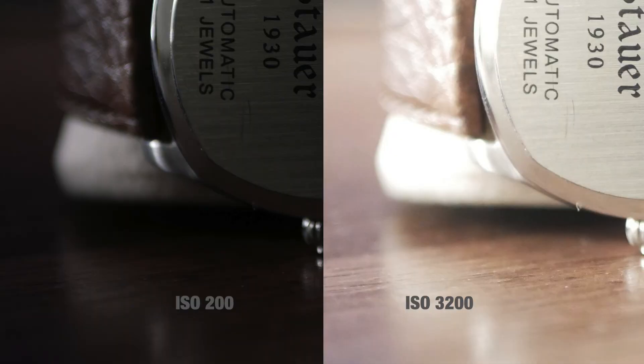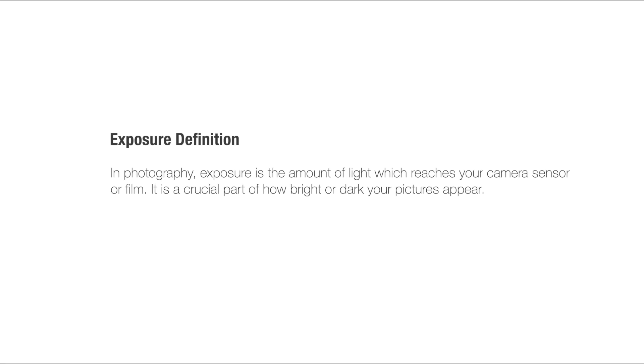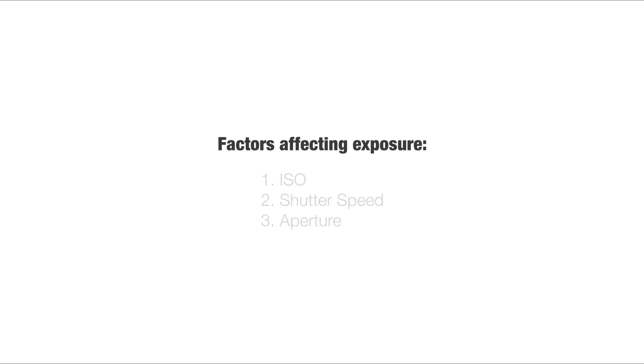But notice that the second image is also a lot more grainy. In digital photography, the amount of light hitting the image sensor per unit area when an image is captured is called exposure. It is affected by the ISO, shutter speed and aperture — we'll cover shutter speed and aperture in the next few lessons. To capture a good image, you need to have the right exposure, or capture the right amount of light.